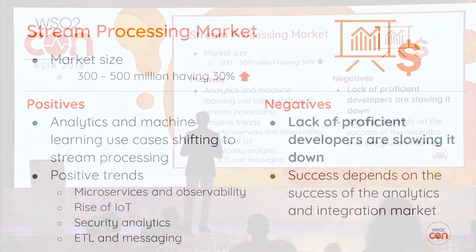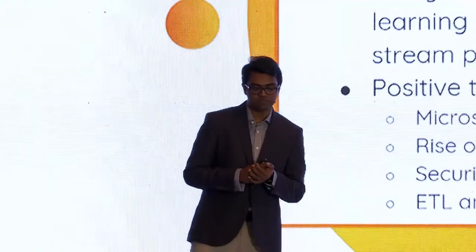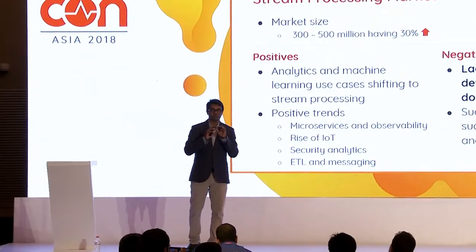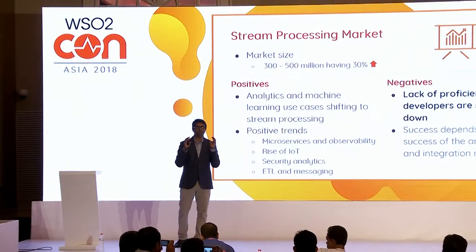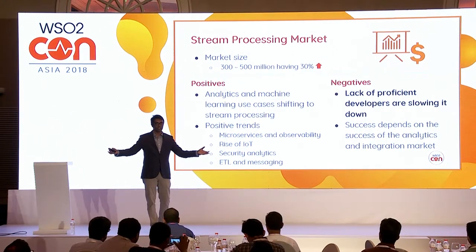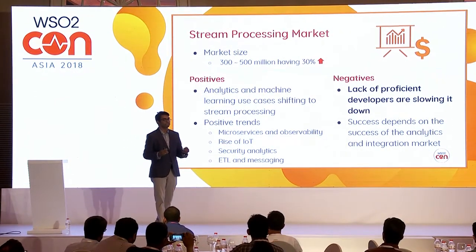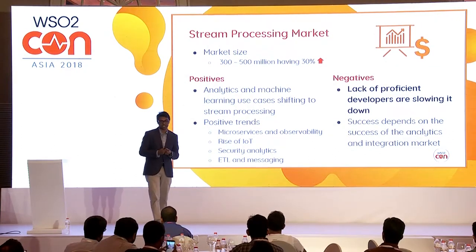When we look at the stream processing market, it's about $300 to $500 million and it's growing 30% year on year. There are positive factors: analytics and machine learning are moving towards stream processing. Microservices and observability are also driving it — now systems are disaggregated, so there should be a governance layer where all of those emit events that we can observe and take meaningful decisions.